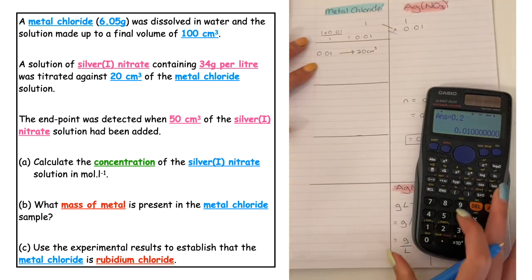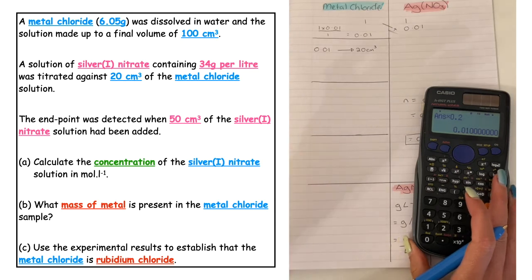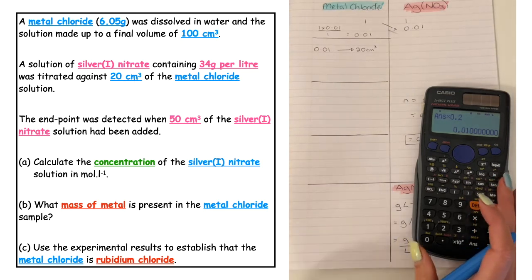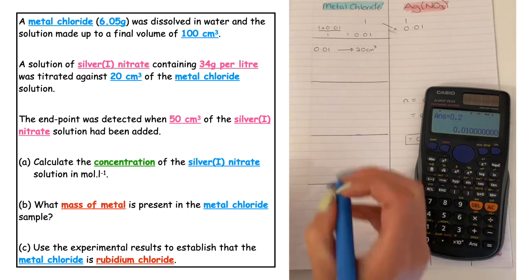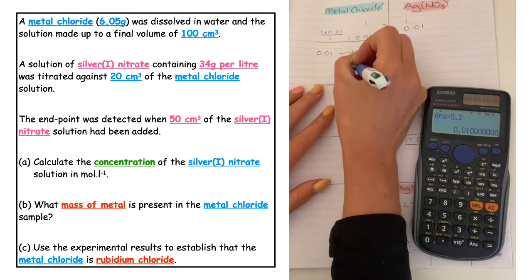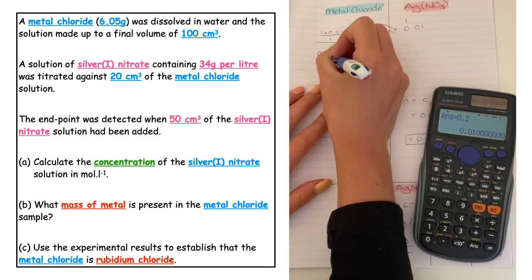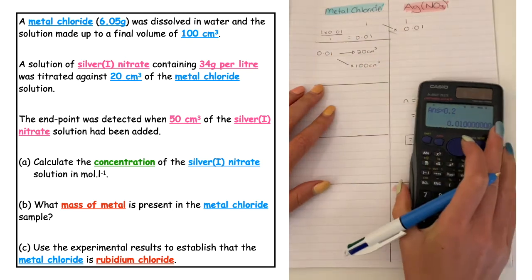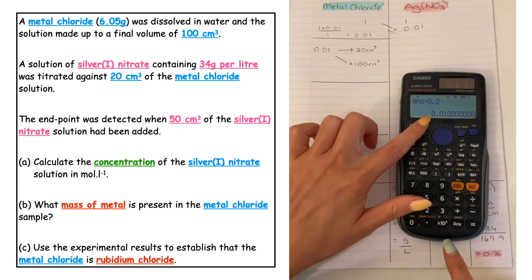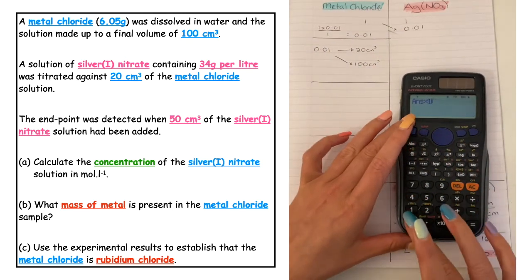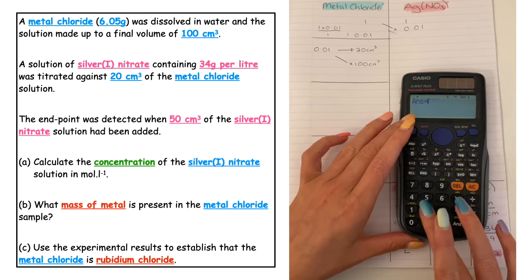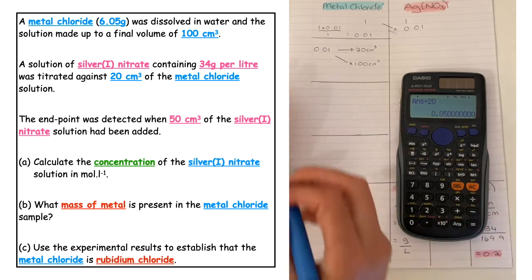We've got 0.01 moles found in 20 centimetres cubed, but that was only a little portion of the standard flask. So we have to scale up for the standard flask which was 100 centimetres cubed. To do that we would do a cross multiplication.